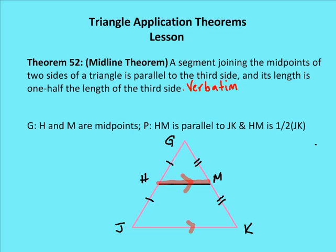Now let's talk about Theorem 52, the midline theorem. I tell my students when writing a proof, I need them to write out the entire theorem word for word — verbatim. The theorem has two components: first, the segment joining the midpoints of two sides of a triangle is parallel to the third side, so HM is parallel to JK. Second, the length of HM is half of JK. We're going to go ahead and prove the midline theorem.